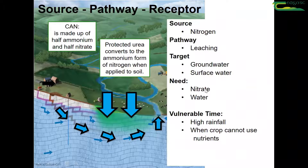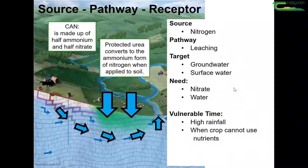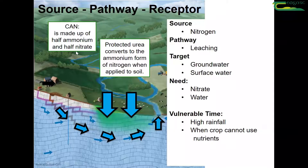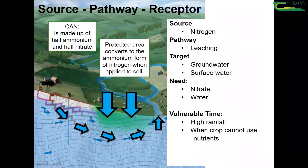So we need two things: we need nitrate and water. Where does the nitrate come from? If we take two examples — take normal CAN, this is made up of half ammonium and half nitrate. Nitrate is the form of nitrogen that can be readily leached through the soil, whereas ammonium sits there and is more stable.